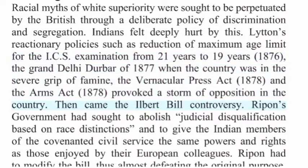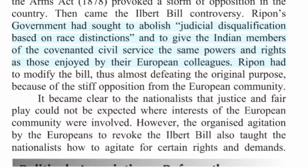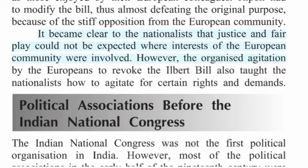Then came the Ilbert Bill controversy. Ripon's government had sought to abolish judicial disqualification based on race distinctions and to give Indian members of the covenanted civil service the same powers and rights as their European colleagues. Ripon had to modify the bill, thus almost defeating the original purpose, because of stiff opposition from the European community. It became clear to the nationalists that justice and fair play could not be expected where interests of the European community were involved. However, the organized agitation by Europeans to revoke the Ilbert Bill also taught the nationalists how to agitate for certain rights and demands.